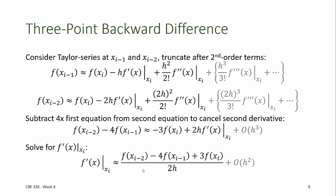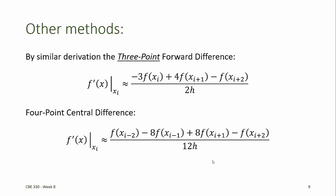Solving for the first derivative provides a formula with a truncation error of order h squared, based on three points. We can perform a similar derivation to obtain a three-point forward difference estimate for the first derivative, using the points xi, xi plus 1, and xi plus 2.